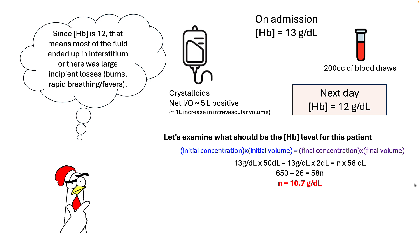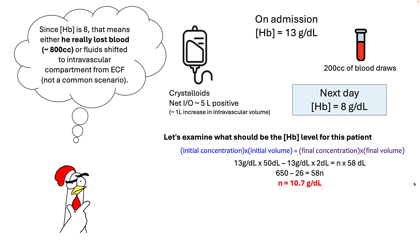Watch my lecture on the interstitium to understand why this can happen. Another reason for a higher-than-expected hemoglobin can be large insensible losses, such as seen in burn victims, high respiratory rates, and sweating. Conversely, if the lab shows a hemoglobin of 8 grams per dL, this would suggest that your patient is either losing blood or has hemolysis, as the drop is more than what you can account for. I look at the dilution factor and blood draws — especially within the first 24 to 48 hours of admission — to differentiate a drop from bleeding versus dilution, which helps me prioritize decisions about anticoagulation, GI consultation, or high-dose proton pump inhibitors.